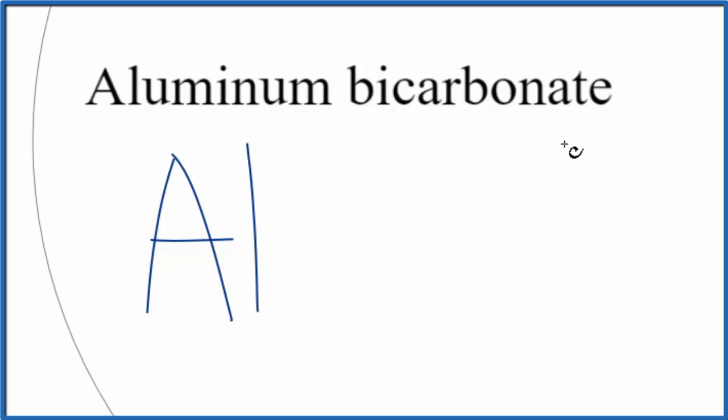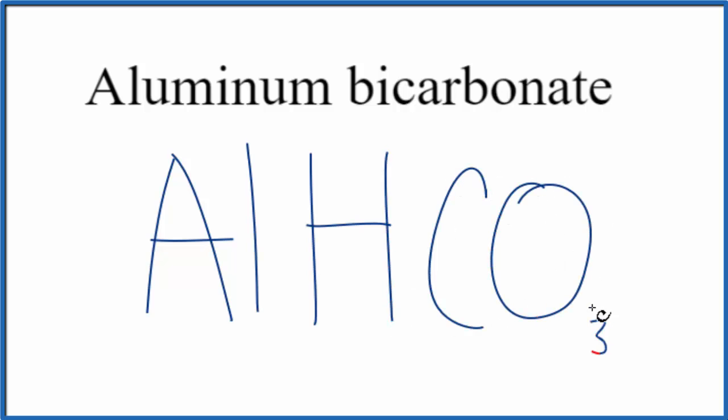Bicarbonate, you see this A-T-E on the end. When you see that, you should recognize that you have a polyatomic ion. You're not going to find this on the periodic table. So you've either memorized that the bicarbonate ion is HCO3, and it has a 1 minus ionic charge, or if you're allowed, you can look it up on a table of polyatomic ions.